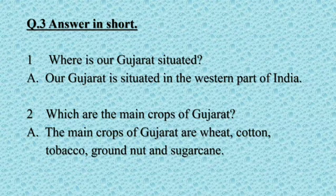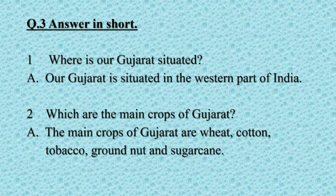No. 2: Which are the main crops of Gujarat? The main crops of Gujarat are wheat, cotton, tobacco, groundnut and sugarcane.